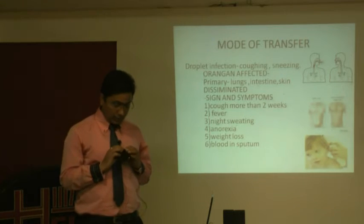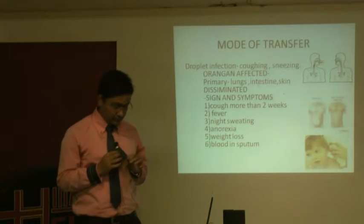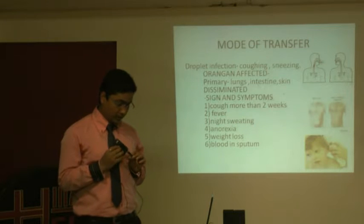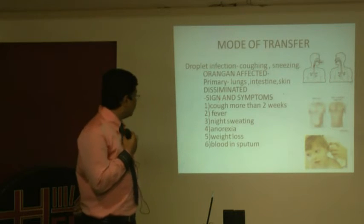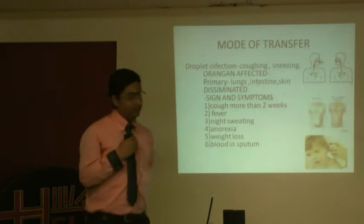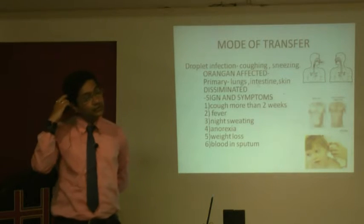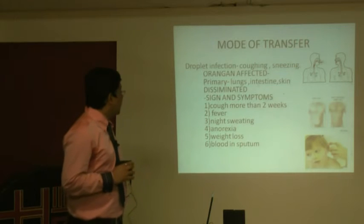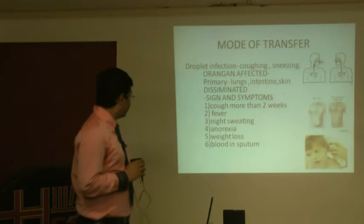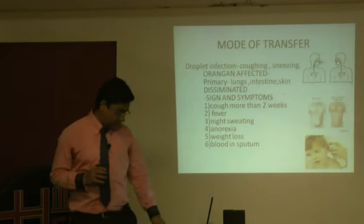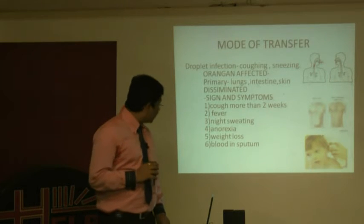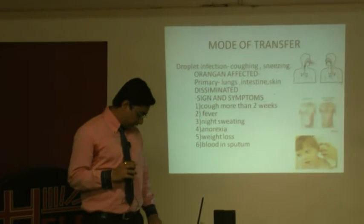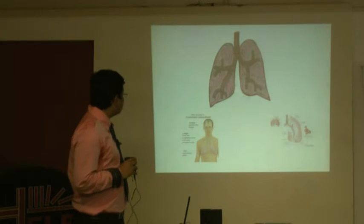Significant weight loss can occur in active tuberculosis. For example, a patient who died of total drug-resistant tuberculosis had her weight reduced from 45 kg to 18 kg. Blood in sputum — labeled as hemoptysis — is found in the later stages of disease when the lungs are very much affected.